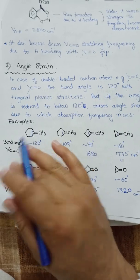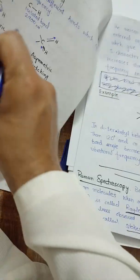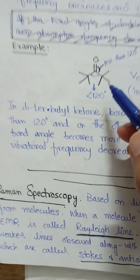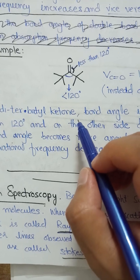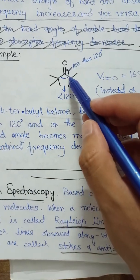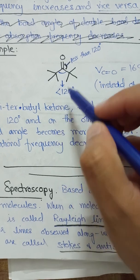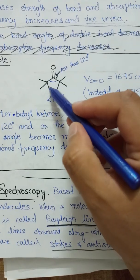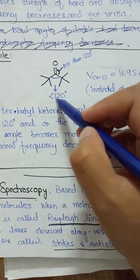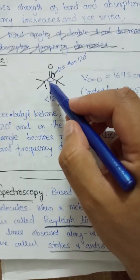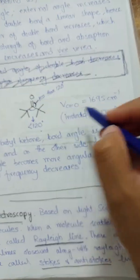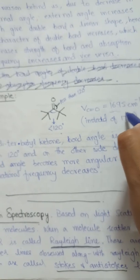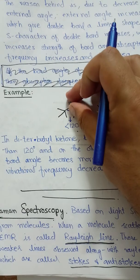Conversely, if the bond angle is increased beyond 120°, the absorption frequency will decrease. For example, in di-tert-butyl ketone, the bond angle is greater than 120° because the bulky tert-butyl groups repel each other. When the angle is greater than 120°, the carbonyl stretching frequency decreases because the bond becomes more angular and the s-character decreases.